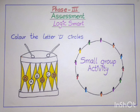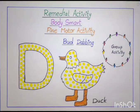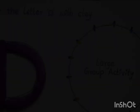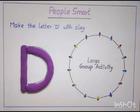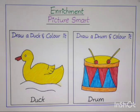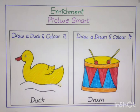Colour the letter D circles. This is a small group activity. Butt dabbing — D is for duck, duck. Make the letter D with clay. This is a large group activity. Draw a duck and colour it. Draw a drum and colour it.